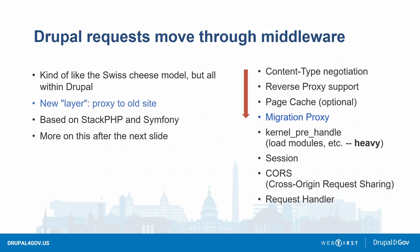HTTP requests move as well. We've already talked about the layers of HTTP proxies — middleware is another series of layers. It's the Swiss cheese model: we're adding a new layer, our proxy. It's pretty easy to do because of the excellent engineering in Drupal core based on Stack PHP and Symfony. We want to be early but not too early in the pipeline — after content negotiation and reverse proxy headers, and if you're using the page cache module you'd want that to run first.